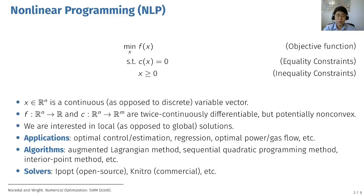There have been a number of NLP solvers, but currently two of the most widely used solvers are IPopt and Nitro. IPopt is an open source solver and Nitro is a commercial one. Both solvers use the Interior Point method in their default options.